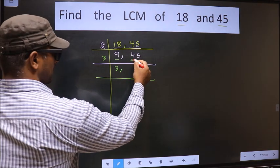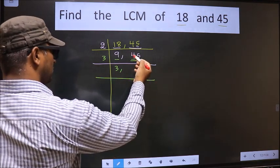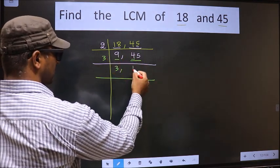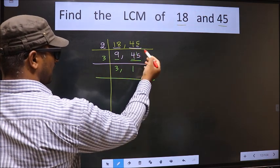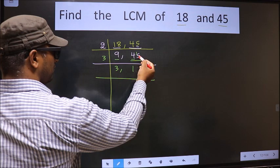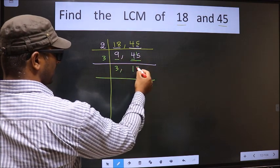The first number is 4. A number close to 4 in the 3 table is 3 × 1 = 3. 4 minus 3 = 1, carried forward making it 15. When do we get 15 in the 3 table? 3 × 5 = 15.